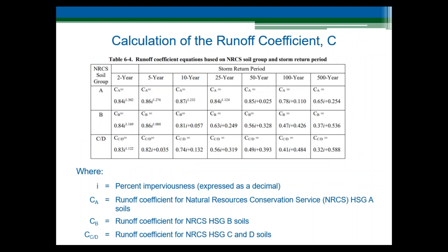The next step is to determine the appropriate runoff coefficients. The 5-year runoff coefficient is needed for the time of concentration overland flow calculation, and the 2-year runoff coefficient is needed to calculate the 2-year peak flow rate. The table on this slide is from the Urban Storm Drainage Criteria Manual and provides formulas to calculate runoff coefficients based on hydrologic soil group, imperviousness, and the design storm period. The Web Soil Survey is a great way to look up the hydrologic soil group for the project area. If you don't know the soil classification at an initial planning level, just assume hydrologic soil group CD, which is conservative.